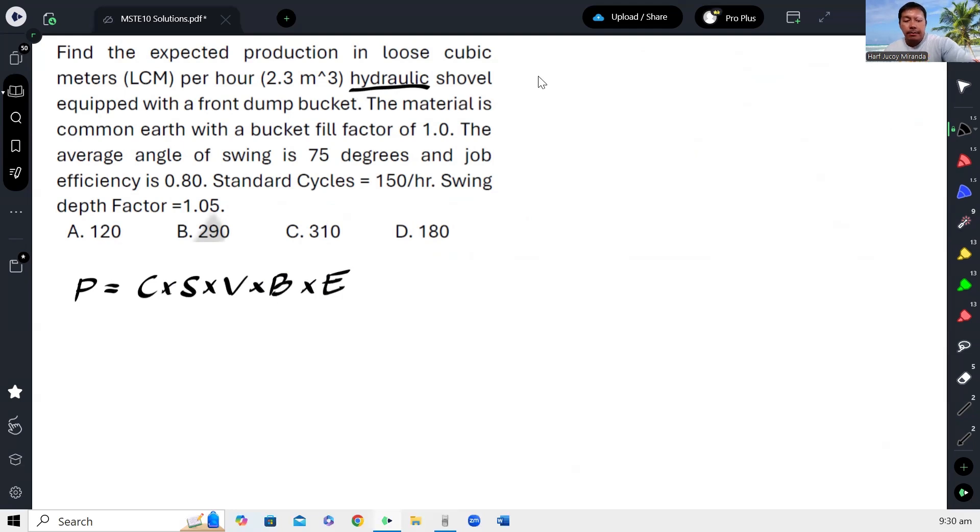In this problem, we are already given the standard cycles, which is 150 cycles per hour. And then you are already given the swing depth factor, which is 1.05. For the volume, you are given the bucket or heap bucket volume, which is 2.3 loose cubic meter per cycle. And then the bucket fill factor is 1, and the efficiency is 0.8.